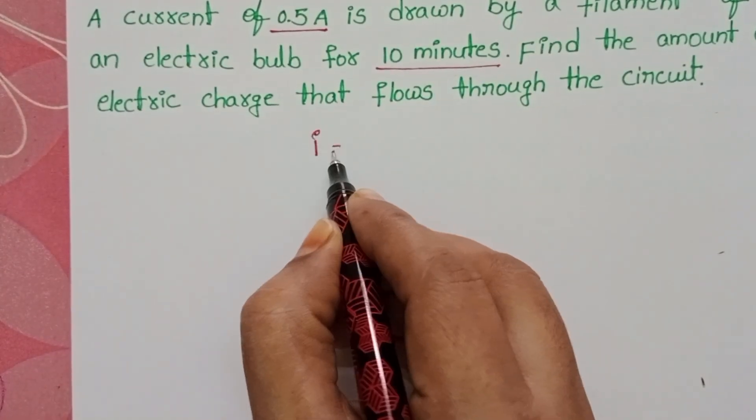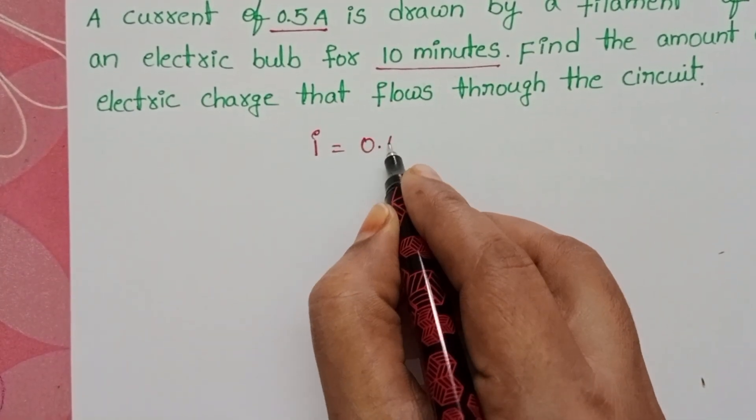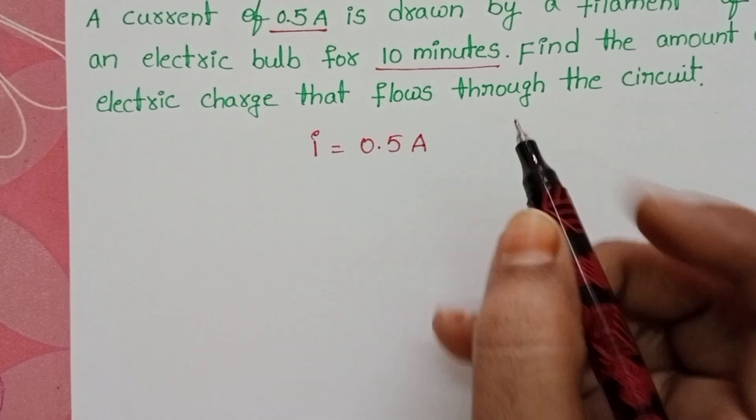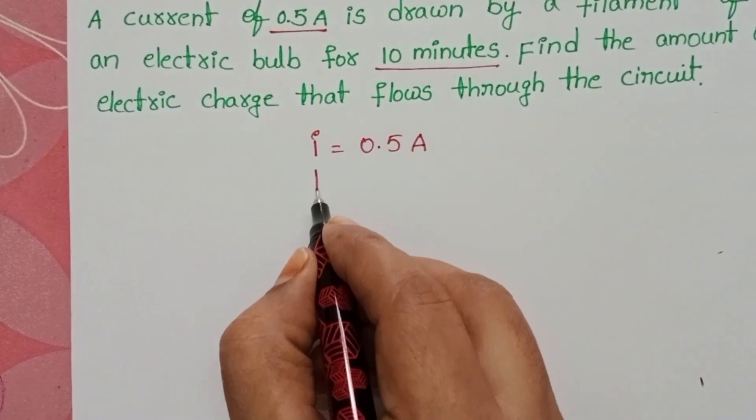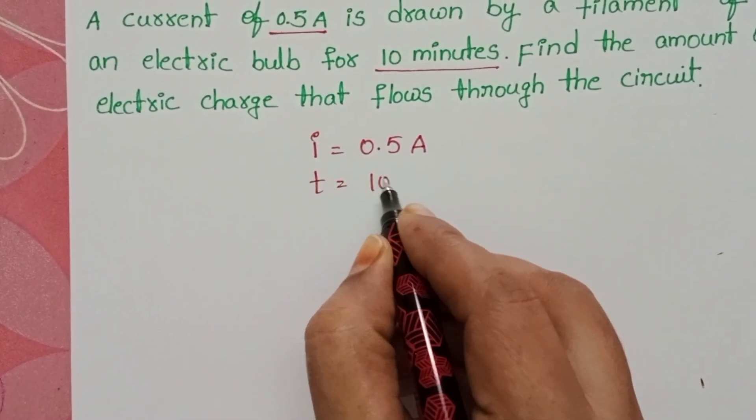Given: electric current I equals 0.5 amperes, and the time of flow T equals 10 minutes.